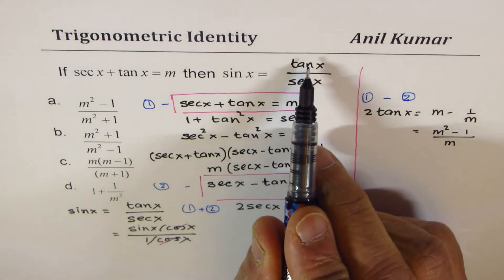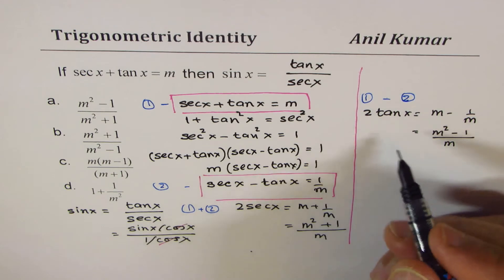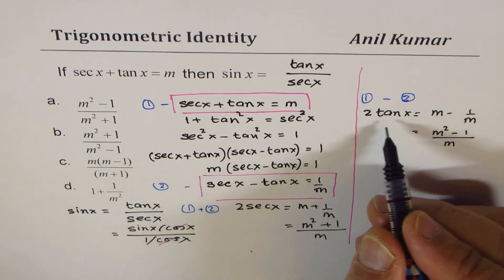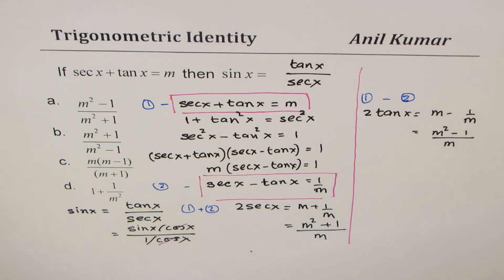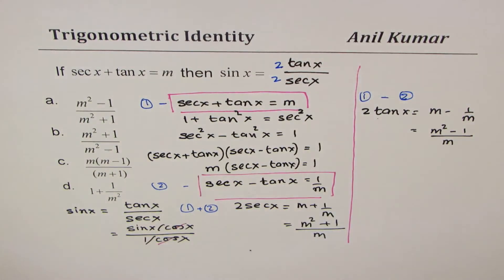Now we know sin x is ratio of tan and secant, right? So you could write two times also. How does it matter? 2, 2 will cancel. We have these two terms here.